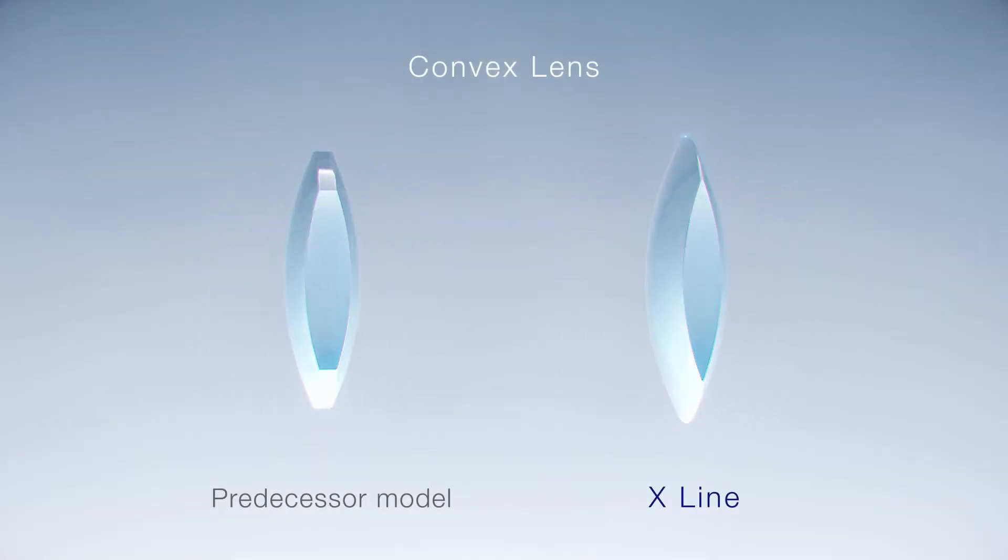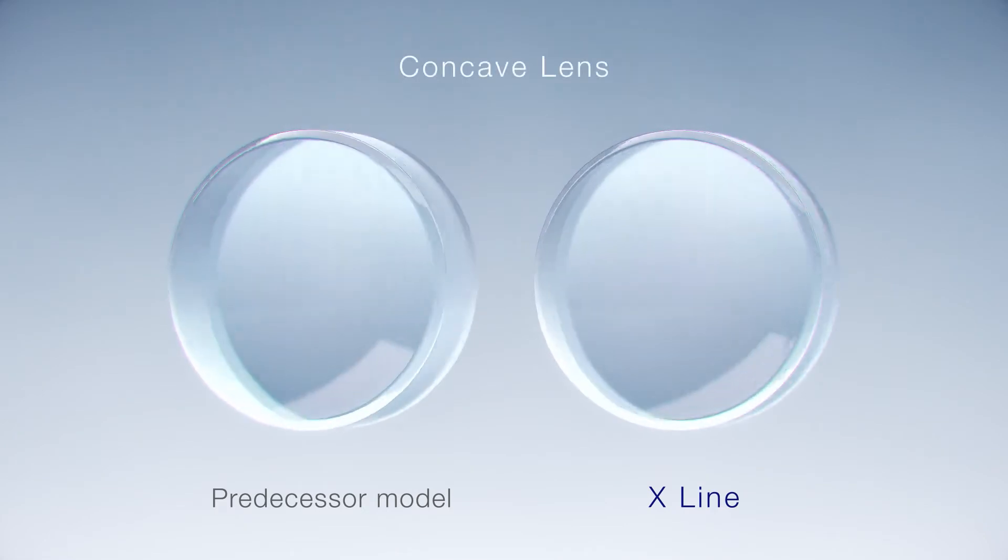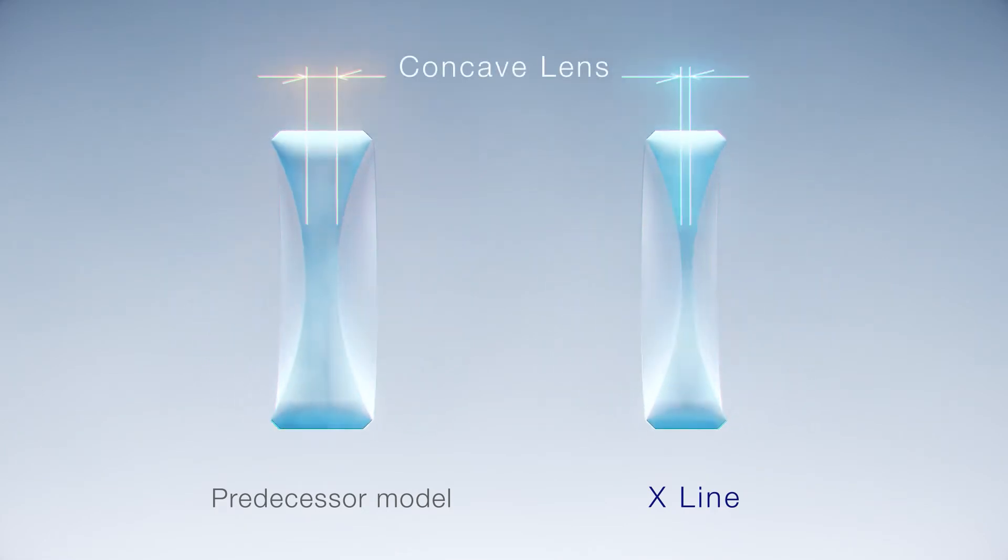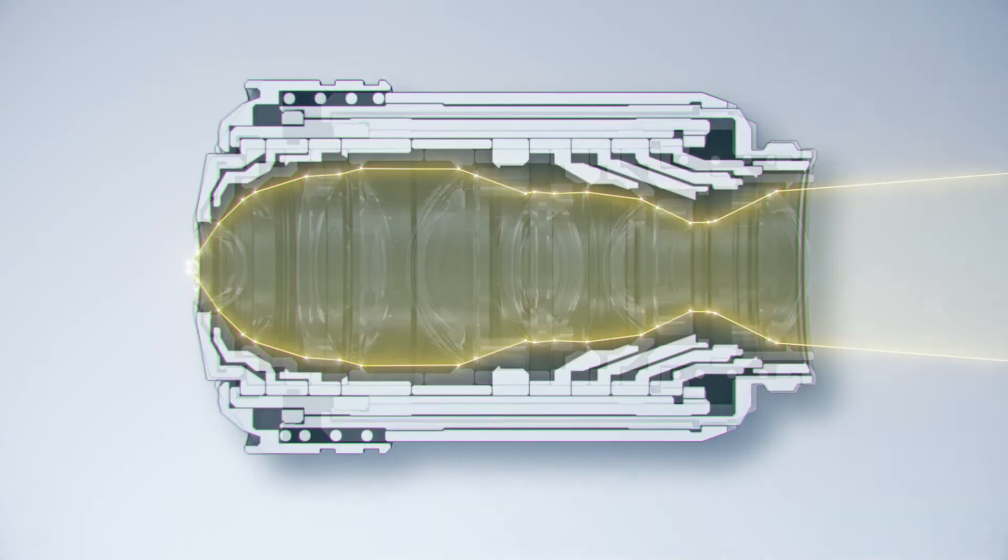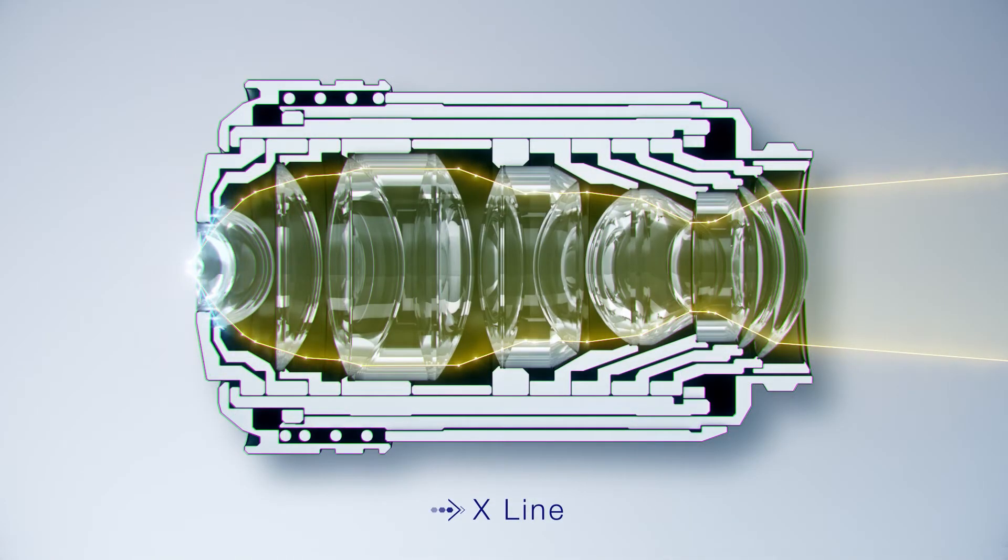X-Line objectives' ultra-thin edge convex lenses and ultra-thin concave lenses provide superior optical performance. Because they're so thin, we can fit more lenses into a standard objective housing.